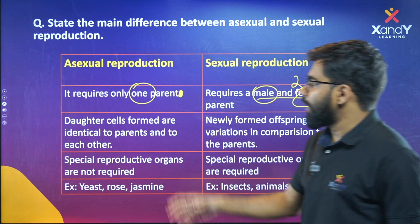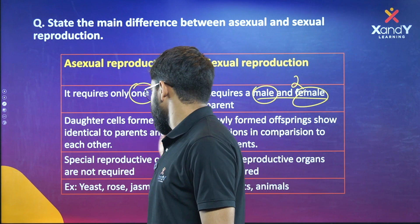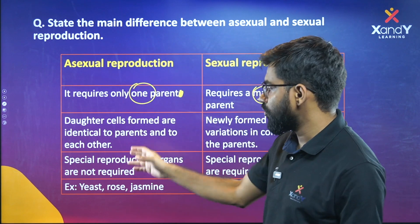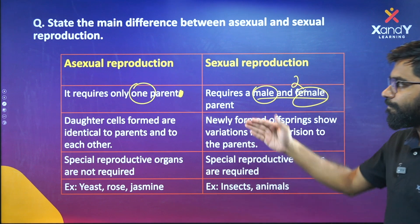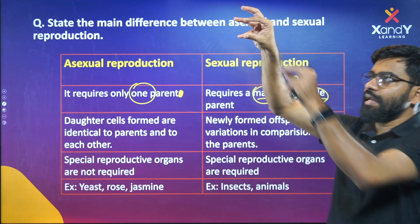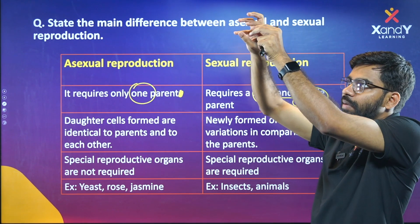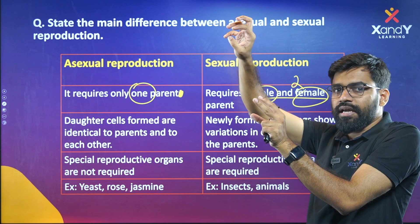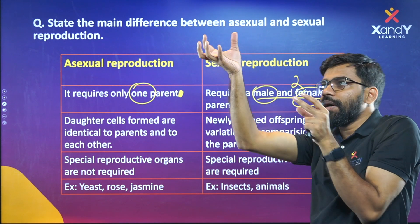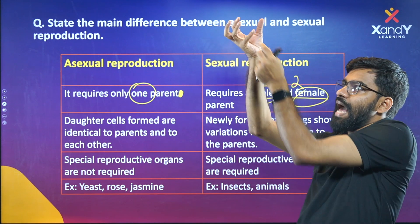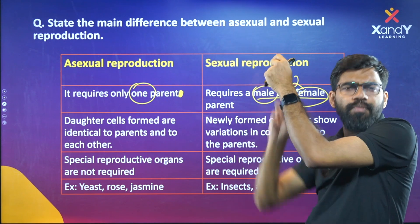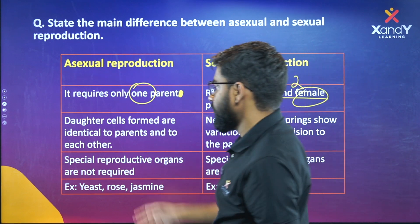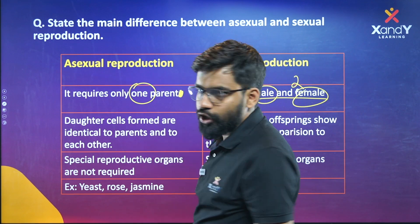In asexual reproduction, the daughter cells formed are identical to the parent and to each other. In sexual reproduction, the offspring formed are not identical.